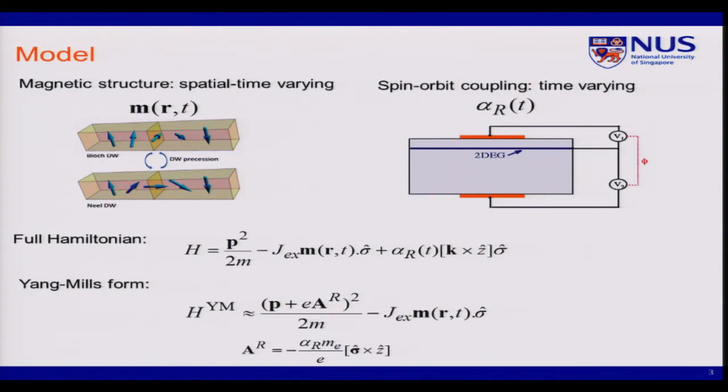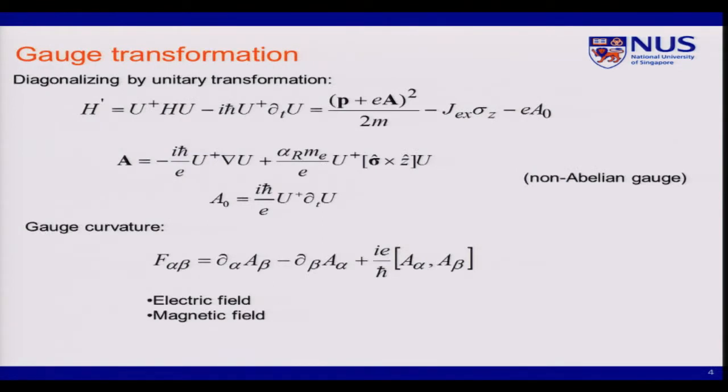So suppose that the exchange field is very strong compared to the Rashba field. The spin will tend to align along the magnetization. So to diagonalize the Hamiltonian, we can use some unitary transformation, and that transformation will generate some kind of gauge which is also time and space-dependent.